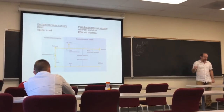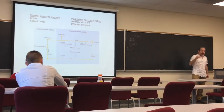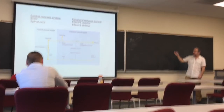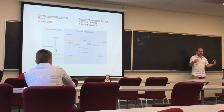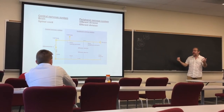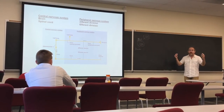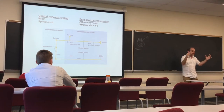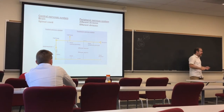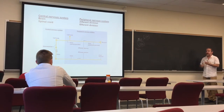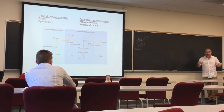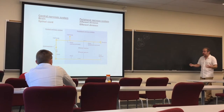The central nervous system collects all information, processes it — meaning it gives meaning to the information — then decides what to do if an action is required. If an action is required, it needs to send messages to the effectors, which are actually organs.